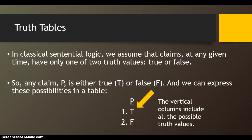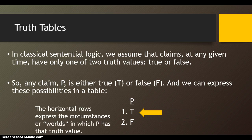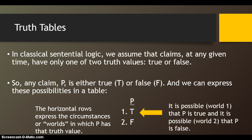The vertical columns include all the possible truth values. For any particular claim, this is either true or false. The horizontal rows express the circumstances, or possible worlds, in which a claim has that truth value. So it's possible that P is true — we'll call that World 1. It's also possible that P is false — we'll call that World 2. These refer to the rows in a truth table.